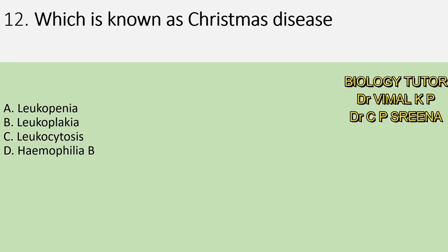Twelfth question: which is known as Christmas disease? A. Leukopenia, B. Leukoplakia, C. Leukocytosis, D. Haemophilia B. Here answer is D — Haemophilia B. It is known as Christmas disease or Royal disease.